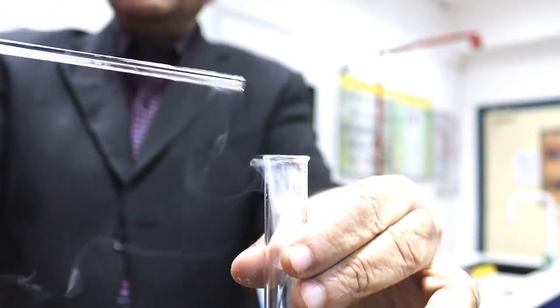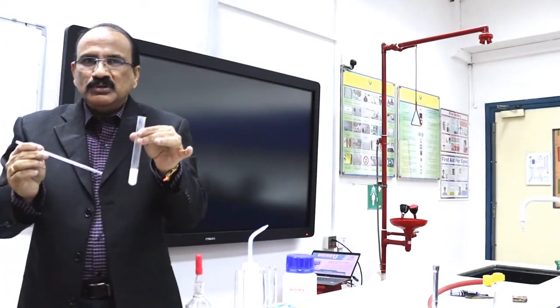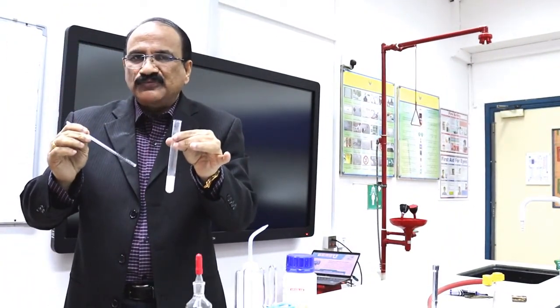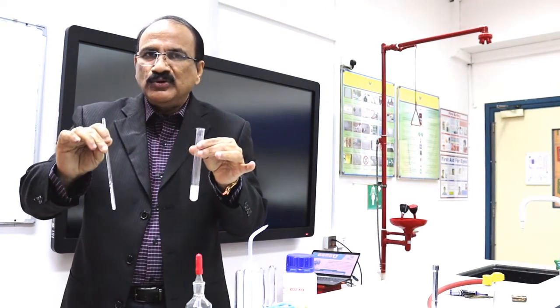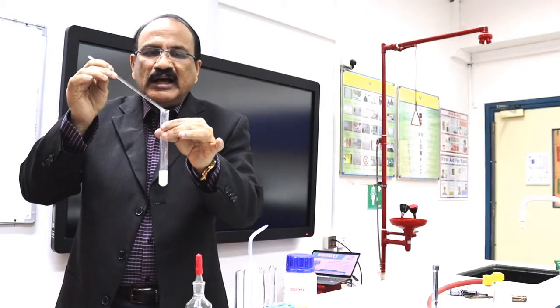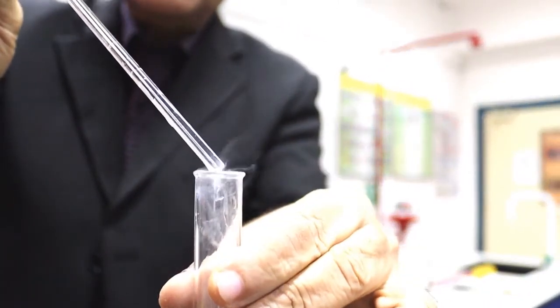This is a preliminary test of chloride ion. Take the salt in a test tube, add concentrated sulfuric acid, take a glass rod, dip it in ammonium hydroxide bottle, introduce at the mouth of the test tube, then you can see white dense fumes.